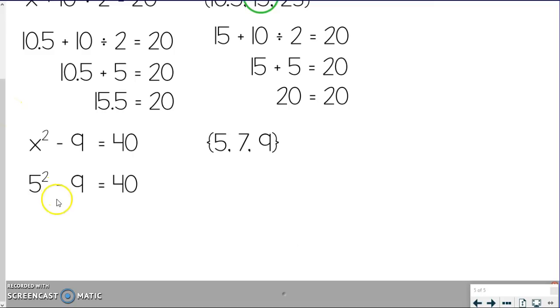So I have 5 squared minus 9 equals 40. I have to do exponents first, so I get 25 minus 9 equals 40. 25 minus 9 is 16, not 40. So, nope, 5 does not work.